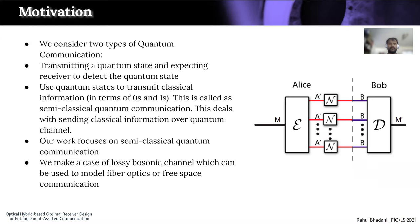To motivate our work we use quantum communication, since the objective of our work is in the quantum communication domain. In quantum communication there are two types: one is where we transmit a quantum state and expect the receiver to detect the quantum state; the second is where we use quantum states to transmit classical information in terms of zeros and ones. This is called semi-classical quantum communication, which is the focus of our work. We also use a lossy bosonic channel which can be used to model fiber optics or free space communication.